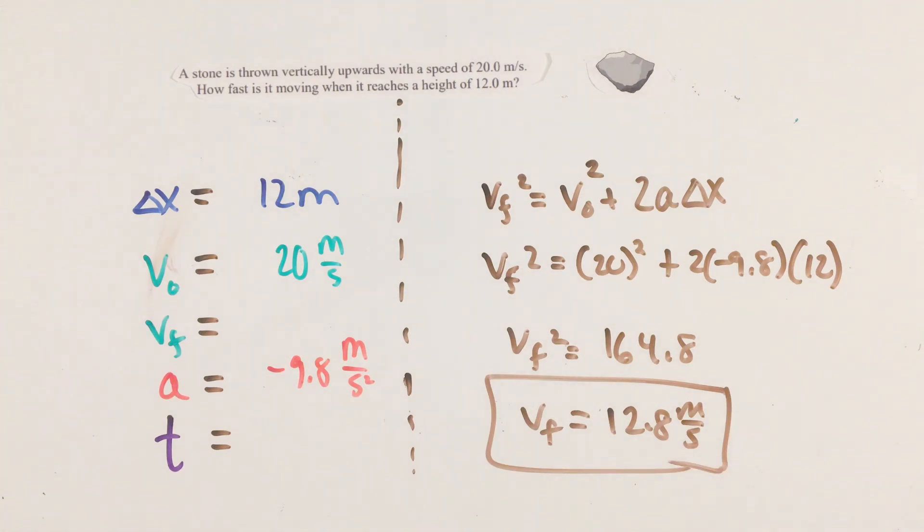With this little tidbit here, we can notice that equation 4 fits perfectly just like the previous examples, and solve for our velocity of the stone at 12 meters high.